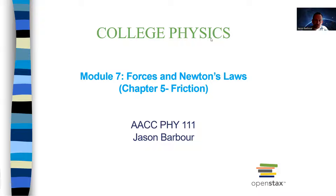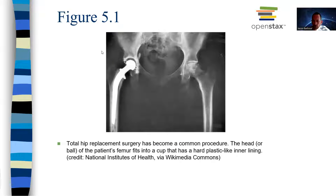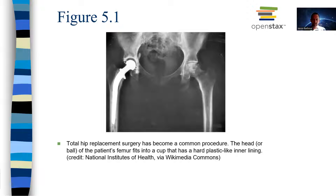We're going to continue with Module 7, which is just a continuation of Module 6 — looking at forces and Newton's laws. Today we're going to delve into friction. Here's an example: an x-ray from a total hip replacement surgery, certainly a case where we want minimal friction. But also keep in mind that without friction, we wouldn't be able to move — walking relies on static friction to push us forward, and our cars and bikes wouldn't work without it. So friction can slow us down, but it's also how we get moving.